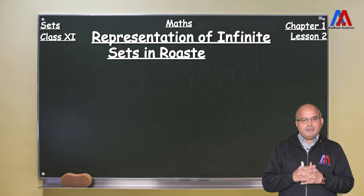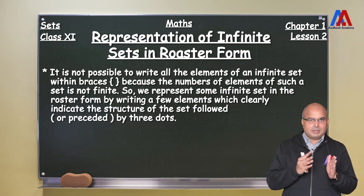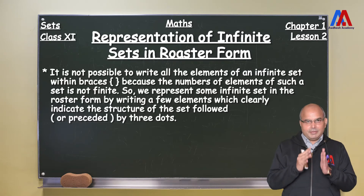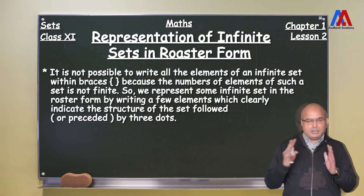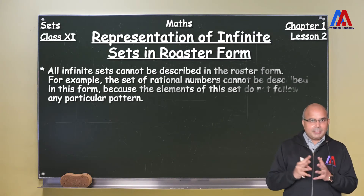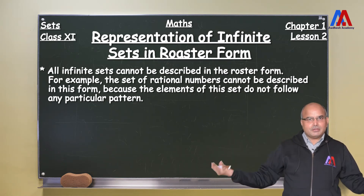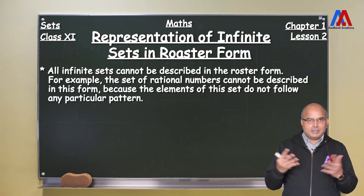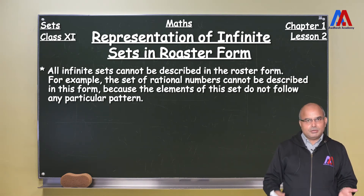We can represent the infinite set in roster form also. One method is that we write some of the members and then put three dots after that. When we put three dots, it means the series will go up to infinity. But remember that all infinite sets cannot be described in roster form. For example, the set of rational numbers cannot be described in roster form because there can be infinite ways of expressing it — 1/2 is a rational number, 3/4 is a rational number, and any two numbers can form a rational number. So it is impossible to create a series with three dots as a continuation.